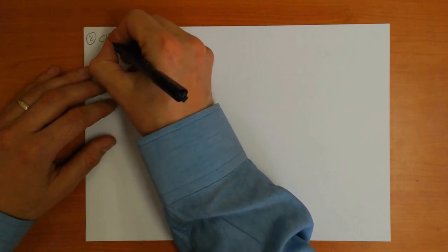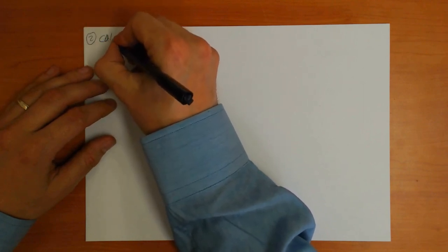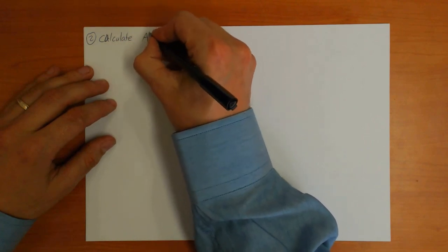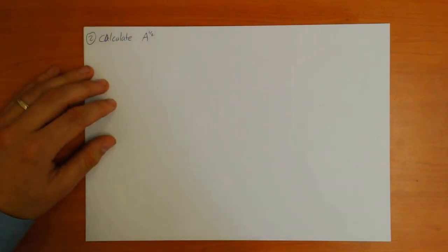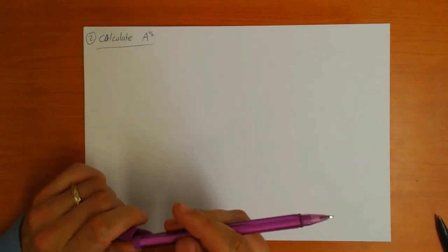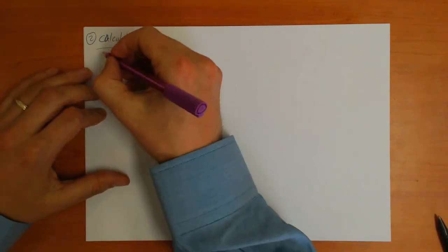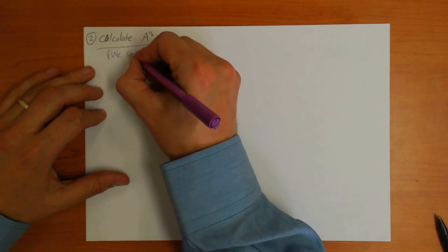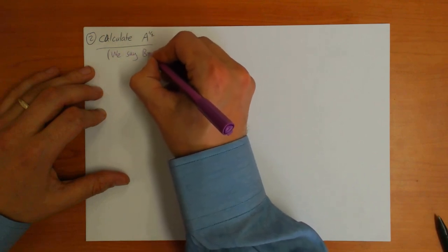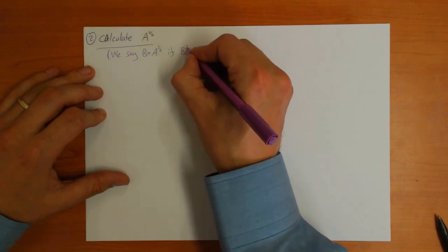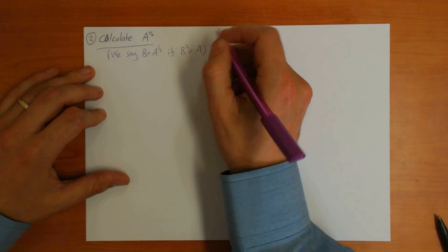Here's another similar example, maybe a bit more interesting. Suppose I ask you to calculate the square root of the matrix — in other words, what is A to the half? This idea of the square root of a matrix is new, but it's defined in exactly the same way as the square root of a number: we say that matrix B is the square root of matrix A if B squared equals A.